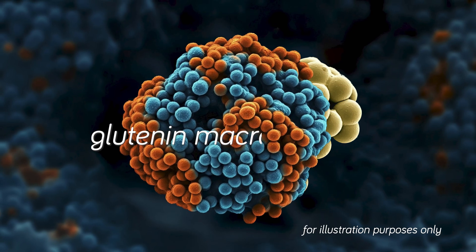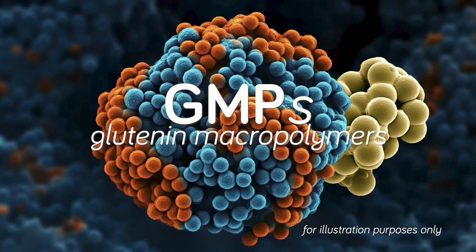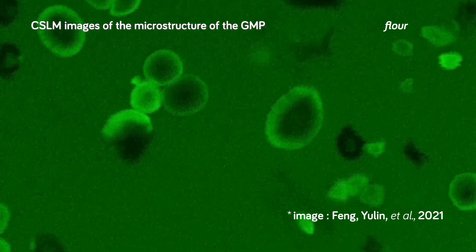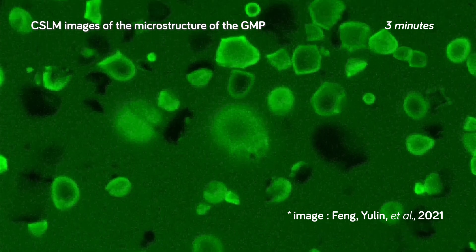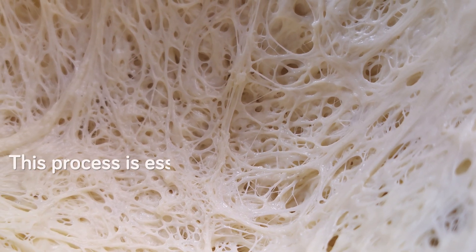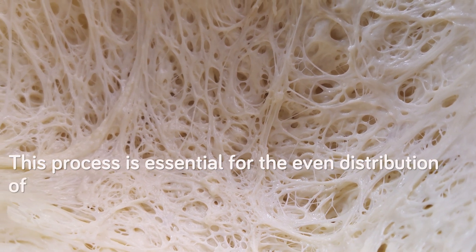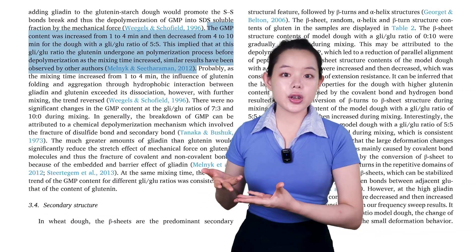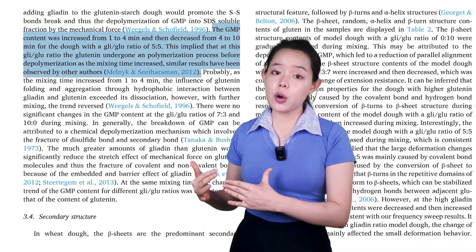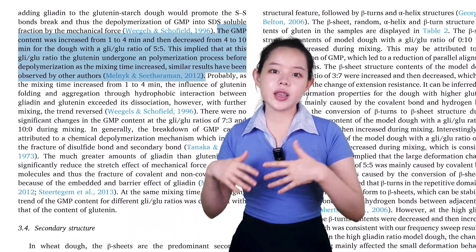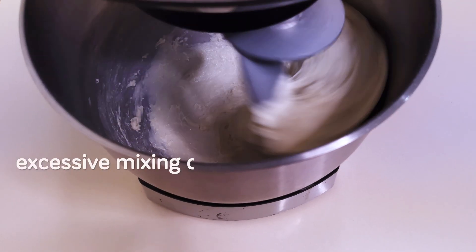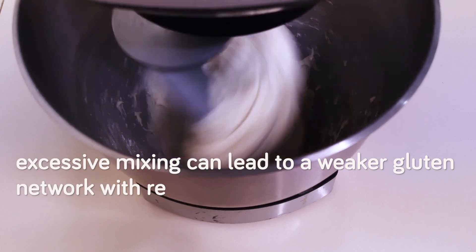Now let's focus on the glutenin macropolymers, or GMP for short. At the start, mixing initially depolymerizes GMPs by breaking down the initial spherical glutenin particles into smaller, irregularly shaped particles. This process is essential for the even distribution of gluten and the formation of a continuous network. Interestingly, a certain proportion of gliadin and glutenin can initially promote polymerization of glutenin before depolymerization occurs as mixing time increases. However, excessive mixing can lead to a weaker gluten network with reduced elasticity, as evidenced by lower extension resistance.